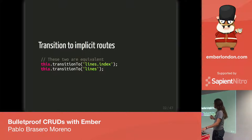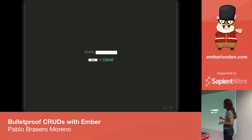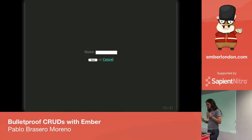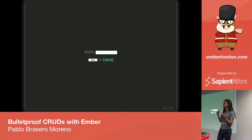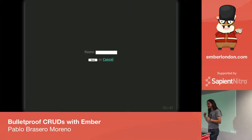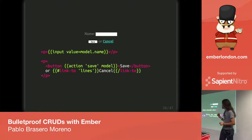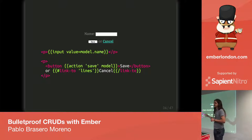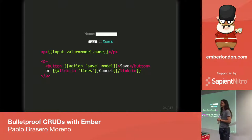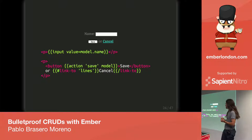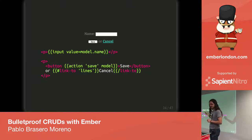Moving on to the templates, and specifically the form, which is the most interesting template in this extremely simple app. If you're a beginner who has just read the guides and the tutorial, you'll probably implement this form with a template that has an input for each attribute, a button that triggers the save action to save the record, and a link to take you back to the list of records — presumably with some code behind the scenes to correctly discard data when cancelling.